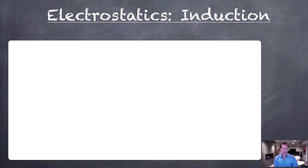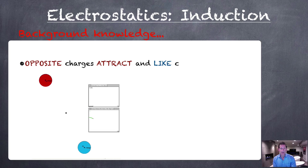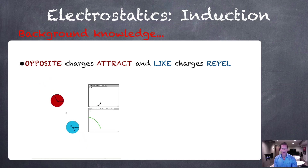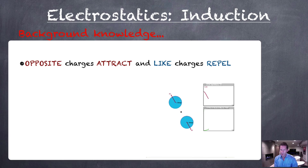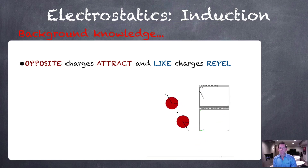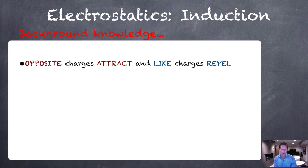Welcome to your Physics 12 screencast on electrostatics. This is the second in the series on electrostatic induction. To begin with some background knowledge from our last session: opposite charges will attract each other and like charges will repel each other. A positive and a negative charge will attract, two positives would repel, or two negatives would repel.